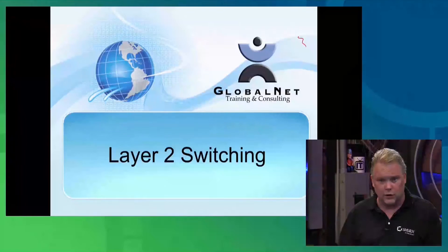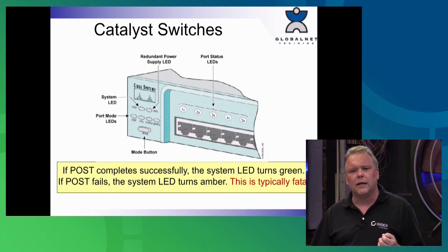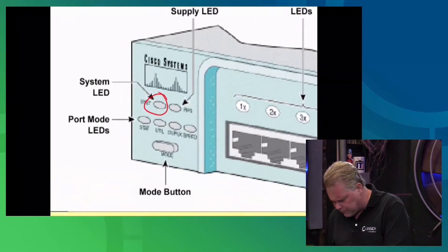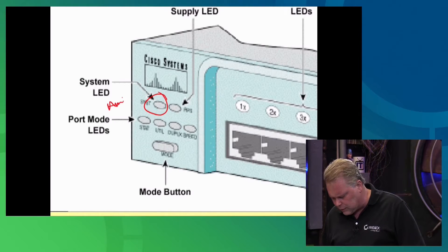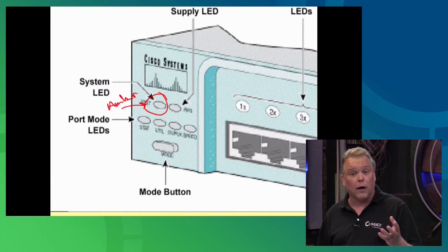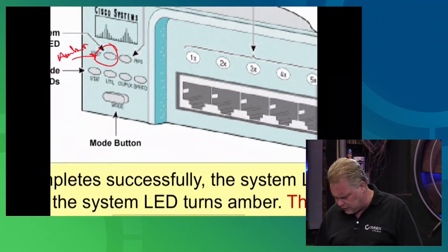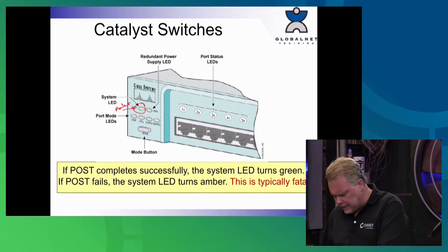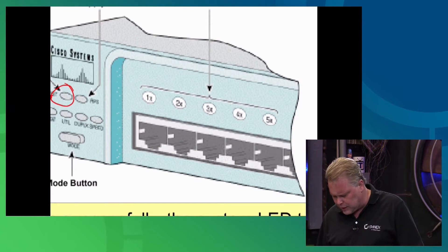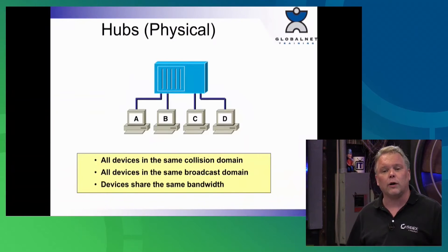Let's take a look at some basic layer two switching technologies. On the Catalyst switches, once the POST test completes, there's a system light here — it will be amber while it boots and runs through the POST test, which takes about a minute. If it stays amber and doesn't turn green, that indicates a problem — typically fatal. Also note that gigabit ports start at gigabit zero slash one, not zero slash zero, and all ports are enabled by default.